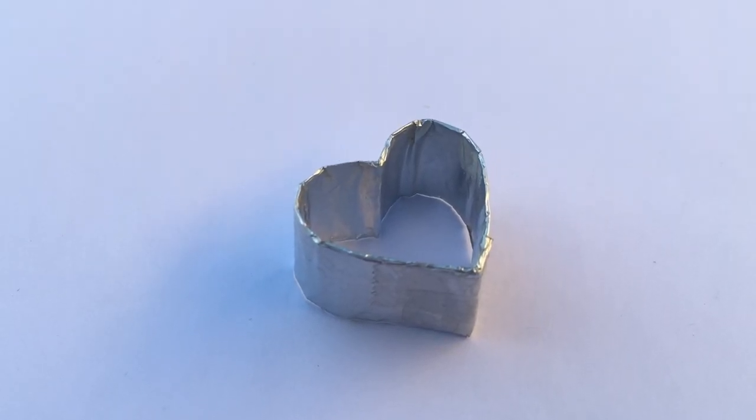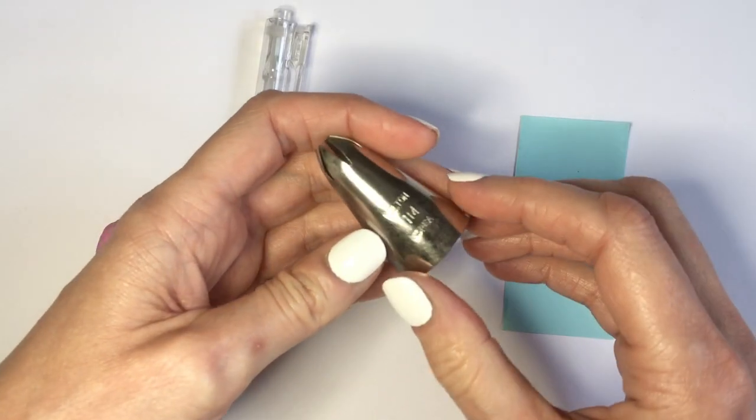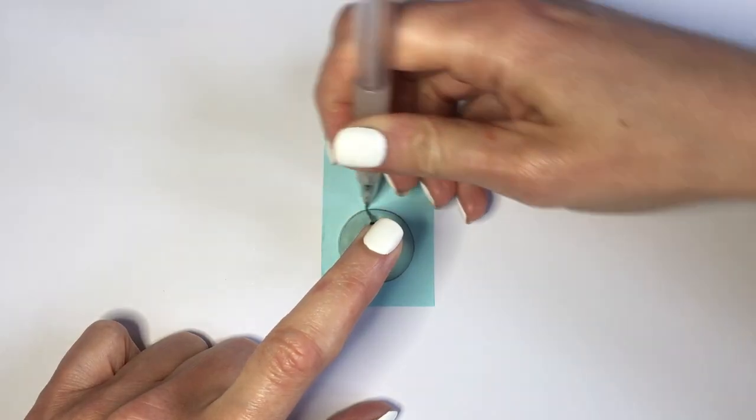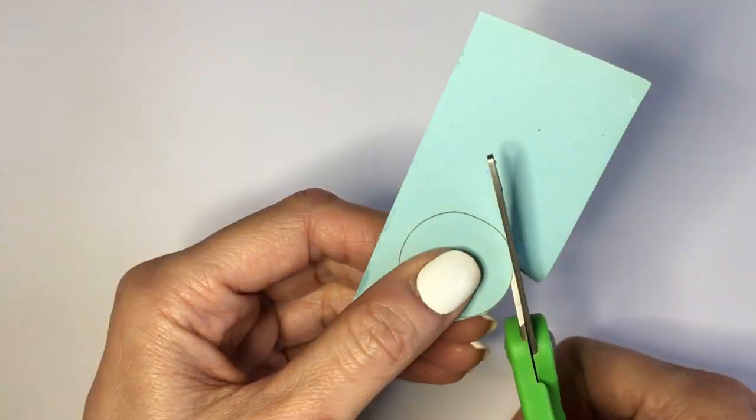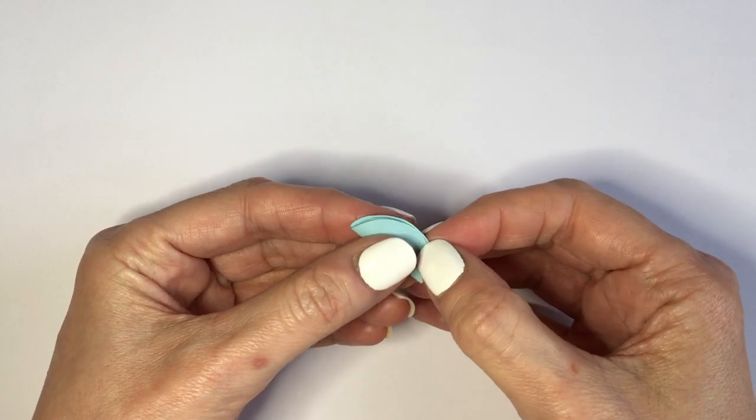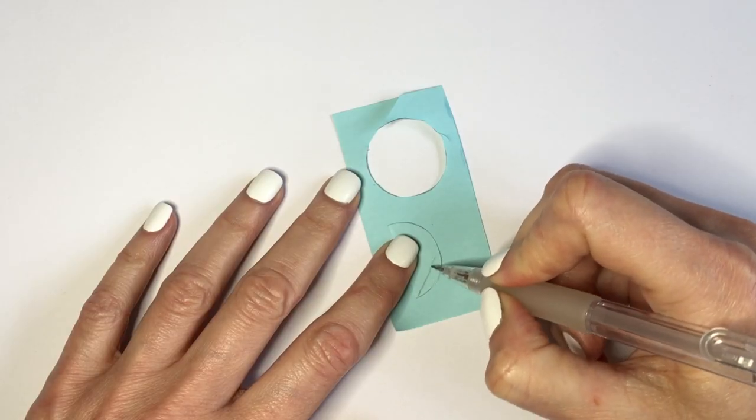First I'm going to be making the heart shape using a piece of paper, my Wilton 1M, and I'm going to trace the circle like that, size of a circle. Then I'm going to cut it, then fold it in half, and then just work on the shape of the heart like this.